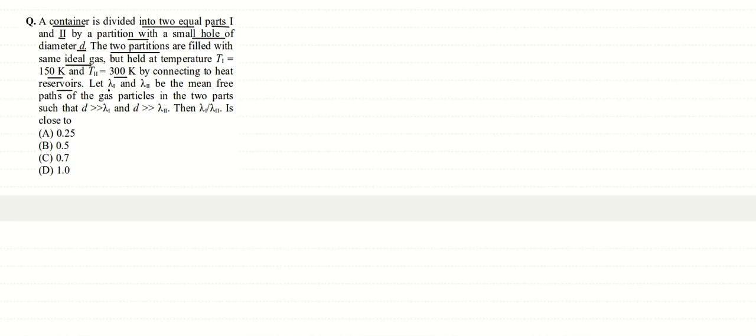two sections. If λ1 and λ2 are the mean free paths of the gas particles in the two parts such that the diameter d is very large compared to the mean free paths, then what is λ1/λ2 close to? This question is based on mean free path.